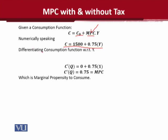If we calculate the derivative with respect to Y, we get the notation of the derivative on the left-hand side. When we calculate the derivative of the constant C0, it will be 0. And the derivative of Y will be 1, so the coefficient, as it is, will remain. So, if we differentiate the consumption function, we will get the marginal propensity to consume.